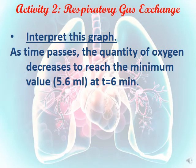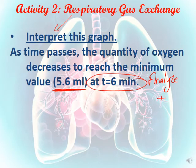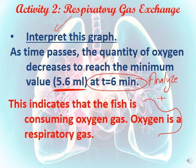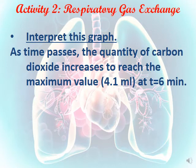As time passes from zero to six minutes, the quantity of oxygen gas decreases to reach the minimum value of 5.6 milliliters after six minutes — this is the analysis. For interpretation, we add the indication: this indicates that the fish is consuming oxygen gas, so oxygen is a respiratory gas since its amount is decreasing.